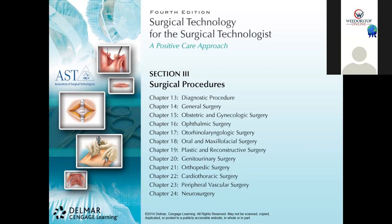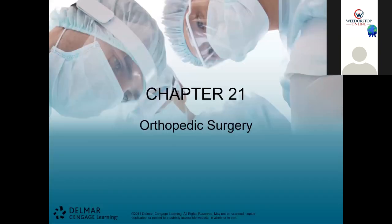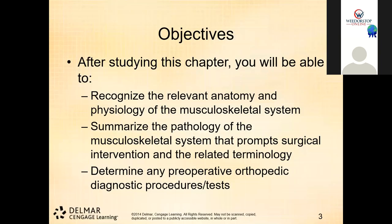Chapter 21, orthopedic surgery. After studying this chapter, you will be able to recognize the relevant anatomy for every single system, summarize diseases of the musculoskeletal system, and identify things that normally prompt surgical intervention.